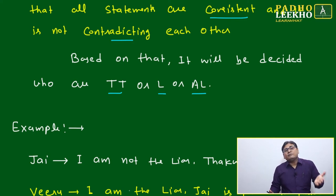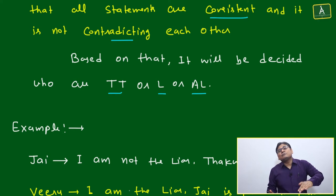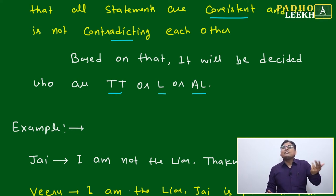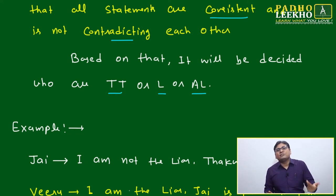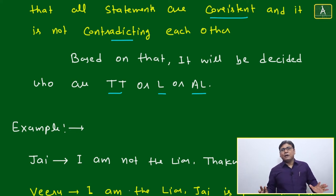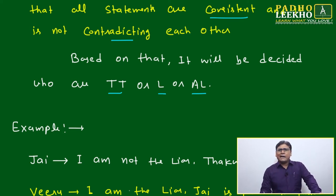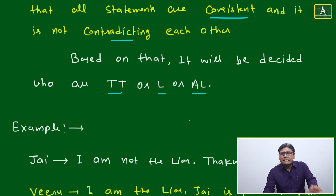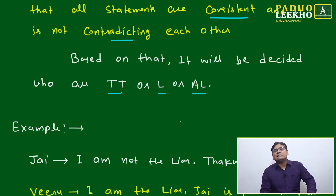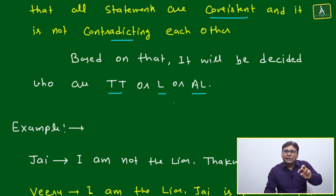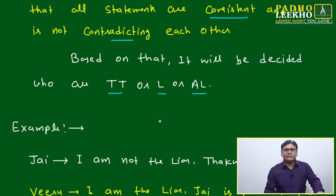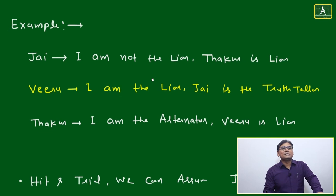Nothing is given about which statement is true or false, and nothing is given about whether a person is a truth teller, liar, or alternator. All you have to do is assume, but your assumption should be correct. If it is not correct, assume something else. With a little practice and observation, you can catch the right assumption quickly.